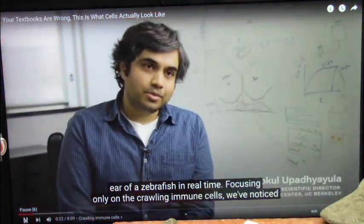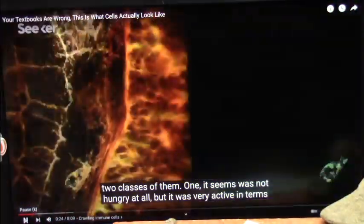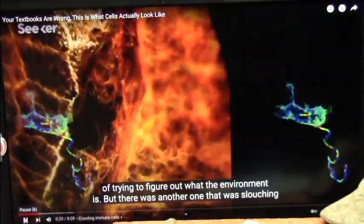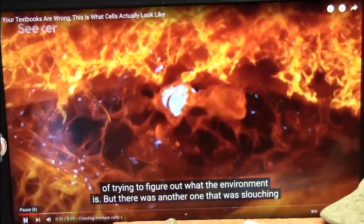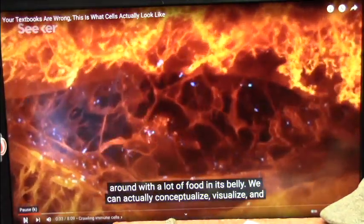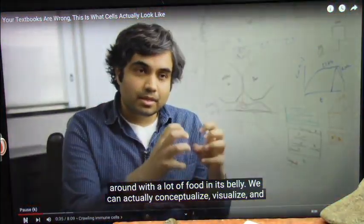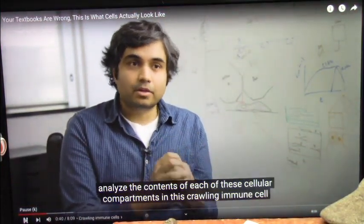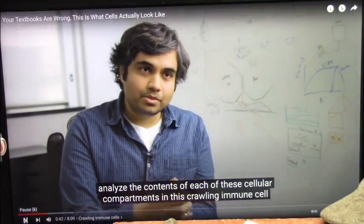Focusing only on the crawling immune cells, we've noticed two classes of them. One seemed not hungry at all, but it was very active in terms of trying to figure out what the environment is. There's another one that was kind of sloshing around with a lot of food in its belly. We can actually conceptualize and visualize and analyze the contents of each of these cellular compartments in this crawling immune cell.